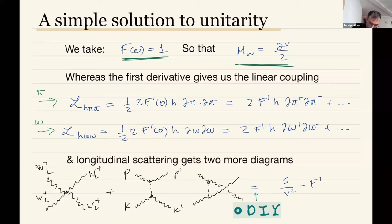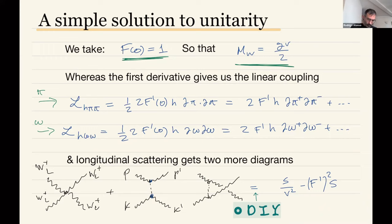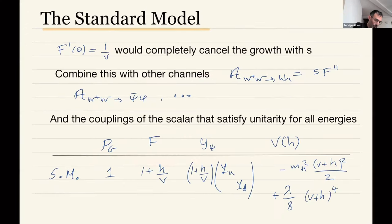You can do this computation yourself — it's outlined in the notes. Just add up these contributions with the ones you already have, not forgetting that all Feynman vertices come with a factor of i in the path integral formulation, and the propagator of the Higgs little h also comes with its own factor of i. The amplitude gets an extra contribution on top of the one you've already computed: something like F'² for the two vertices, times the center-of-mass energy s.